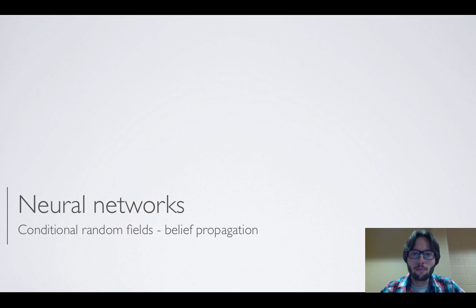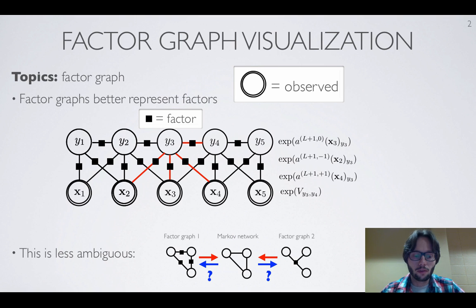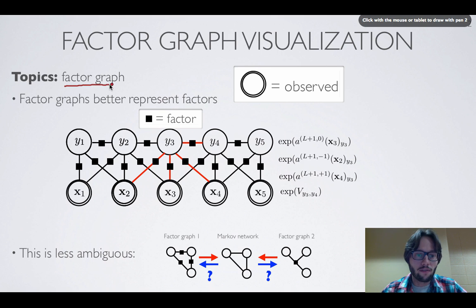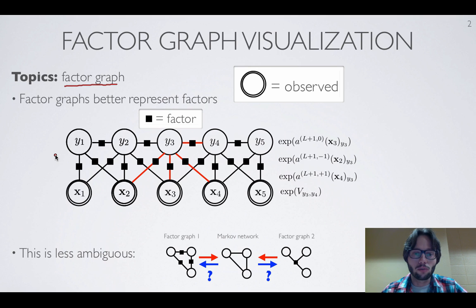In this video, we'll see a more general algorithm for performing inference in general conditional random fields, known as belief propagation. We've seen in the previous video that we could visually illustrate an undirected graphical model like a conditional random field as a product of factors in a factor graph, where nodes correspond to random variables and other nodes correspond to the different factors in the model.